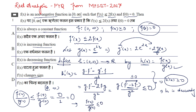But f(x) is given as non-negative (f(x) ≥ 0). Since we proved f(x) ≤ 0 as well, this implies f(x) = 0 for all x. So f is the constant zero function.